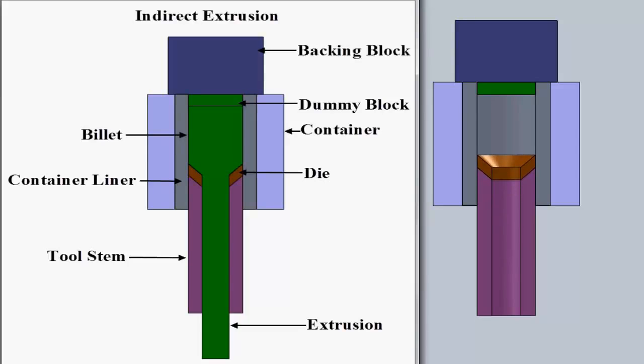In the indirect extrusion process, the hollow ram or die forces against the stationary workpiece, which has been backed up against the flat end of the upper die.